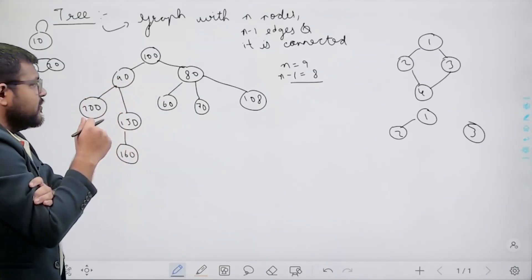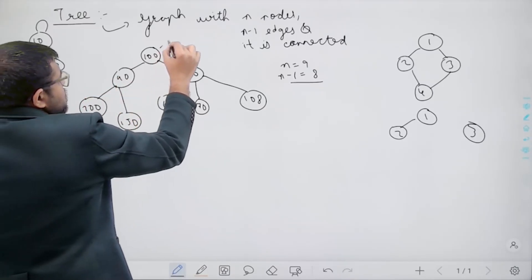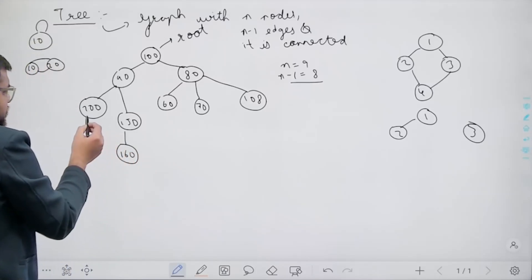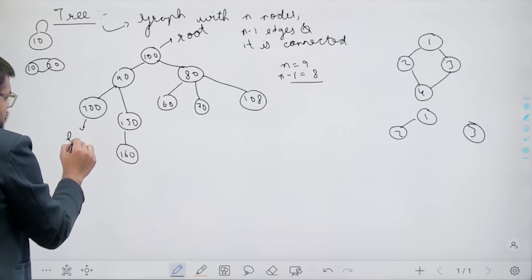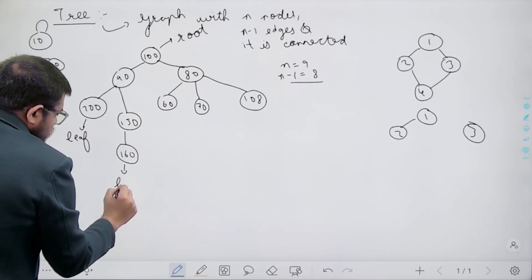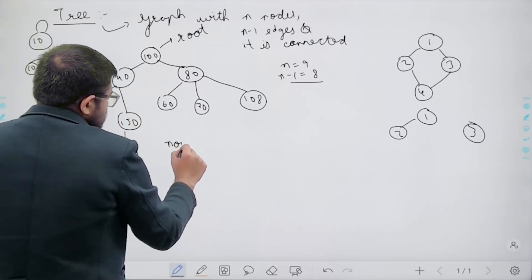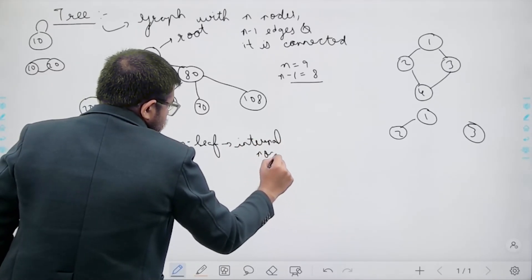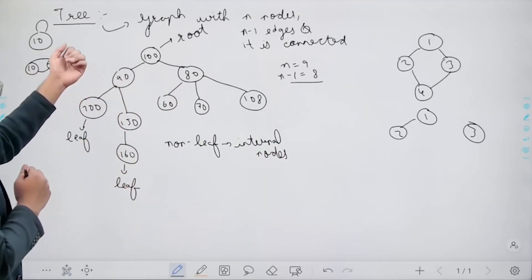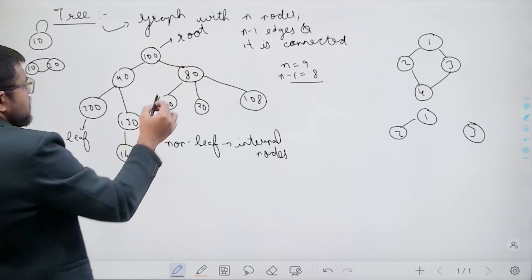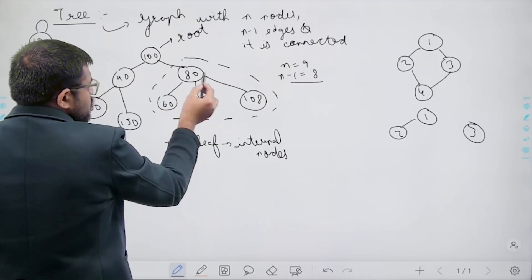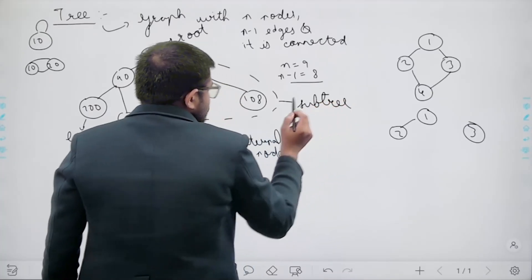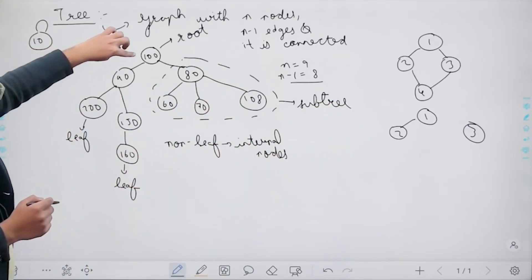Now let me discuss some definitions. The top node is called the root node. Nodes which do not have children are called leaf nodes. Nodes which are not leaf nodes are called internal nodes. A sub-part of the tree is called a subtree — for example, a portion with four nodes and three edges where there is a path between each and every pair of nodes is a subtree.